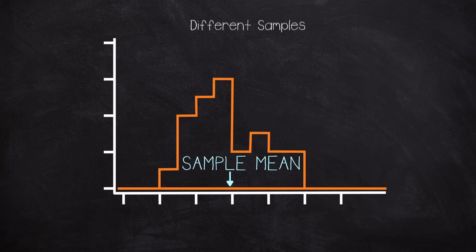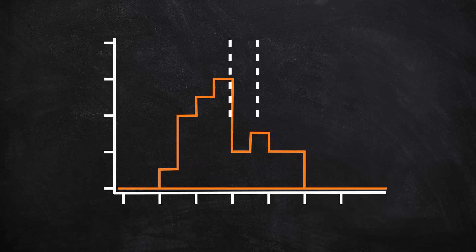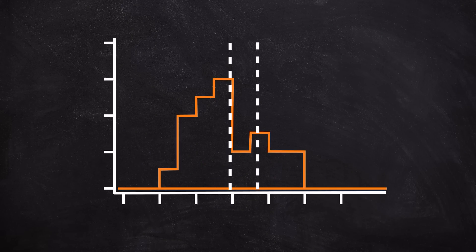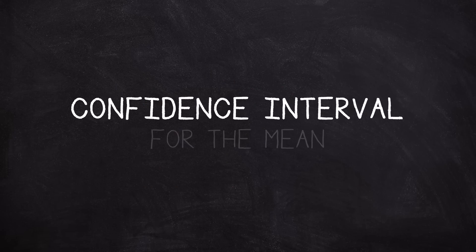To account for differences that would occur between samples taken today, yesterday, or tomorrow, we can attach a margin of error to our estimate, and be reasonably confident that we will capture the population mean. This is the idea behind a confidence interval.